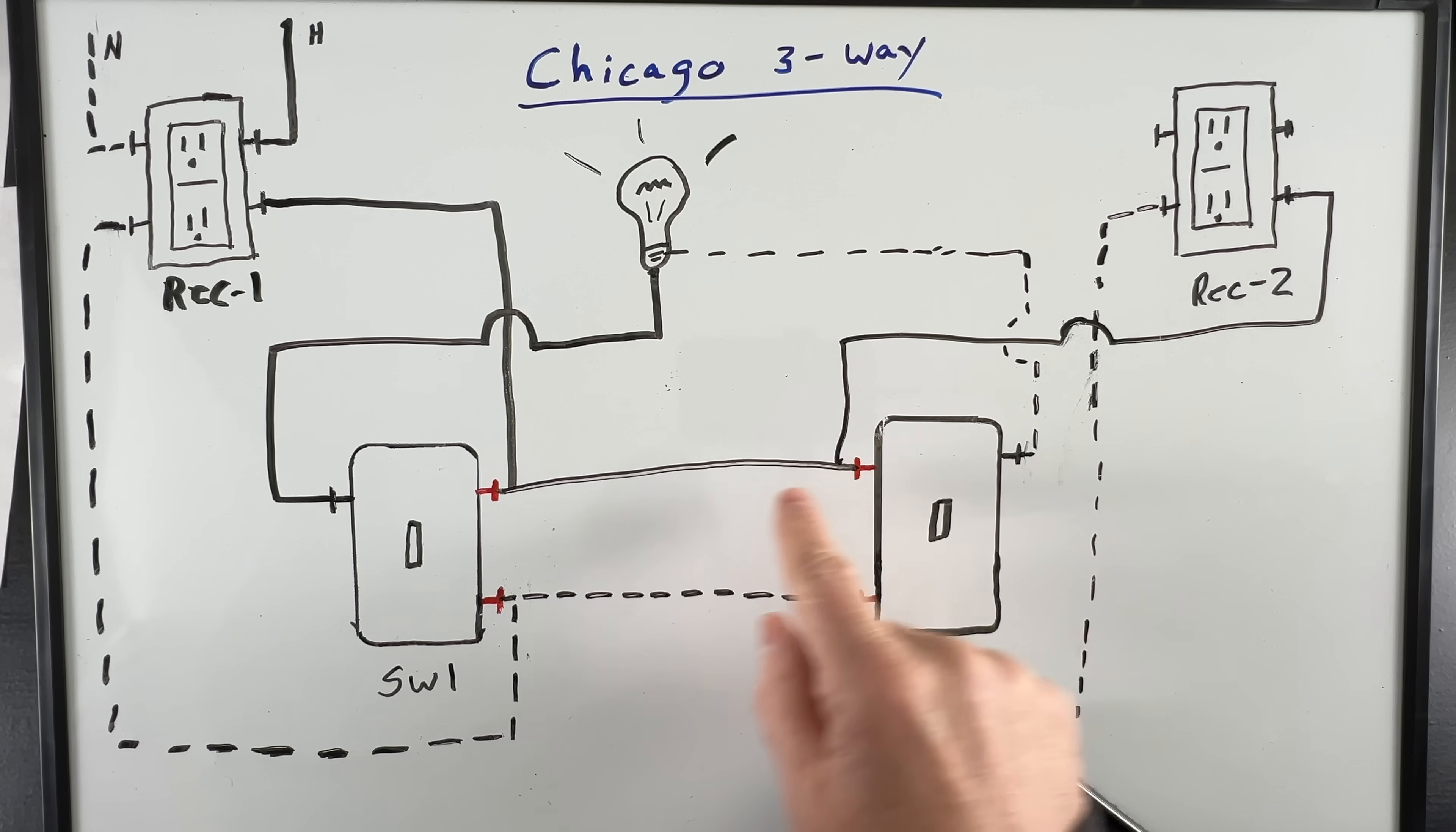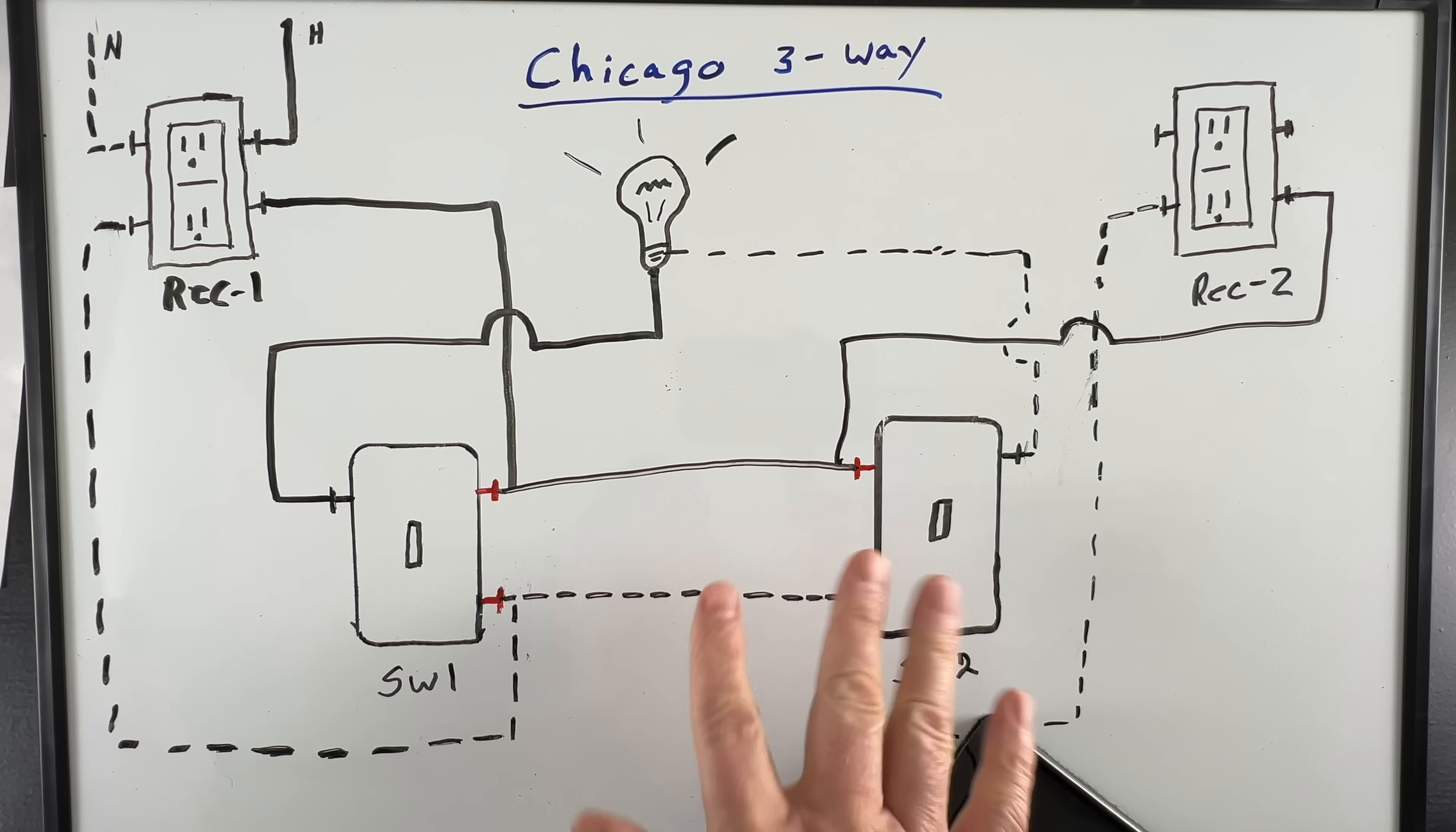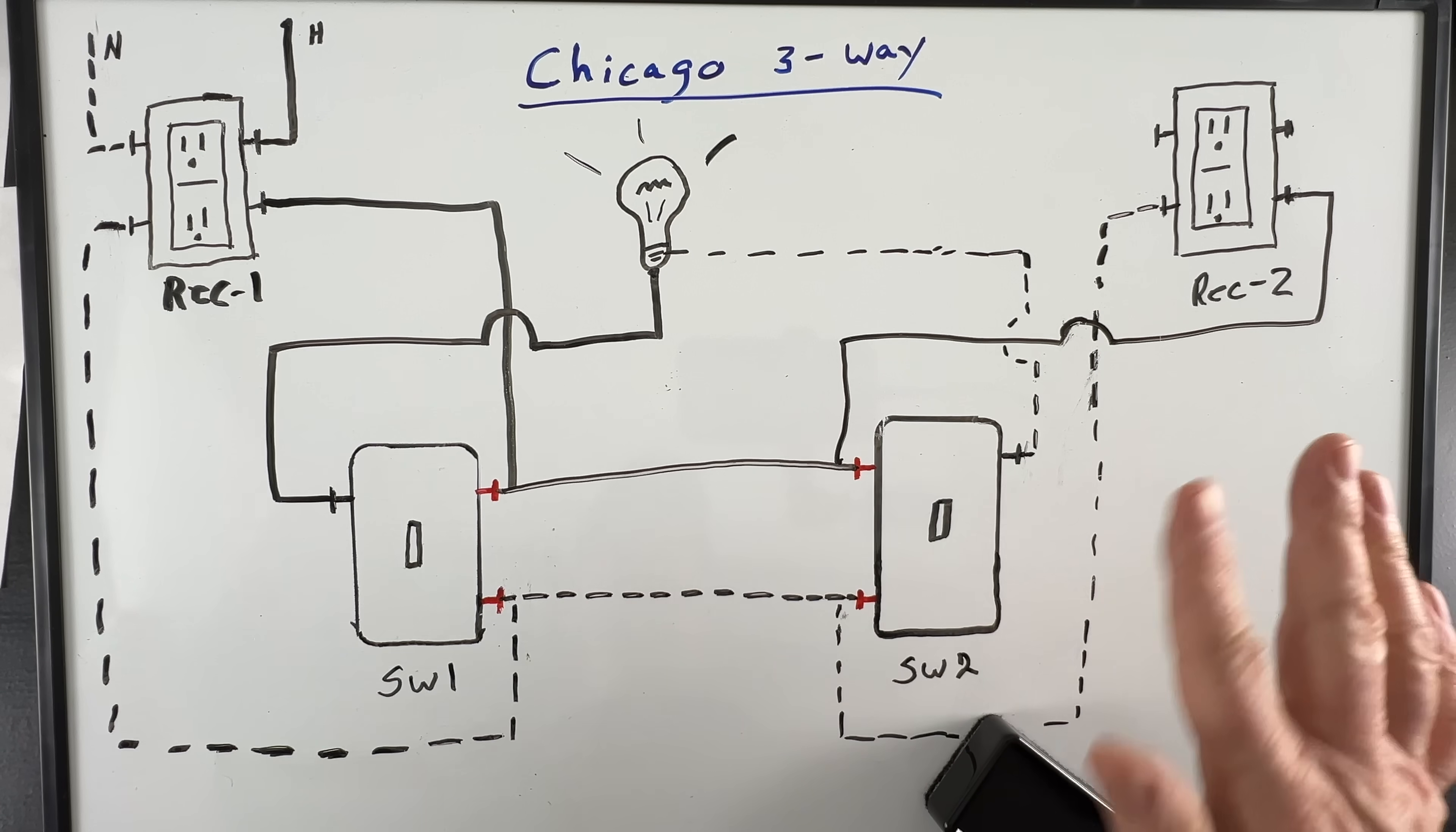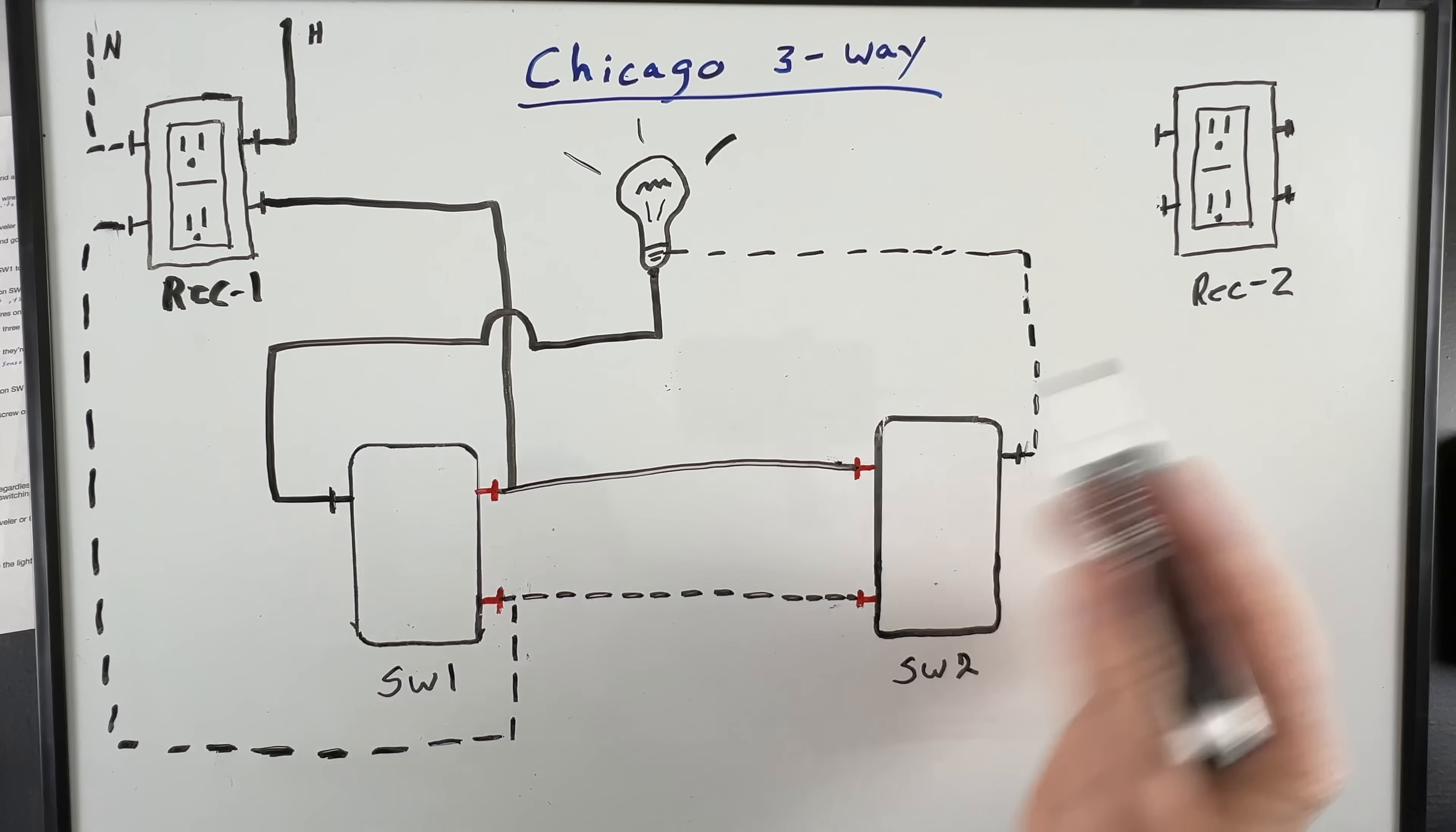Since we know that our power carries through the switches up to receptacle two regardless of the switch position, we can erase these lines for now to reduce clutter and make it easier to understand.